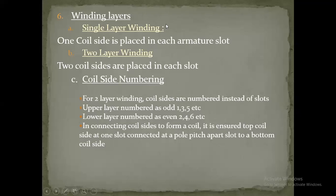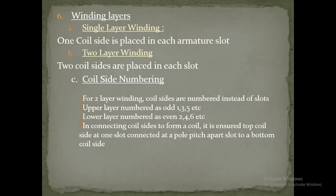Moving to winding layers: Part A is single layer winding — one coil side is placed in each armature slot. Part B is two layer winding — two coil sides are placed in each slot, meaning there are two windings per slot. Part C is coil side numbering for two layer winding: the upper layer coil sides are numbered as odd numbers (1, 3, 5, etc.) and the lower layer coil sides are numbered as even numbers (2, 4, 6, etc.).